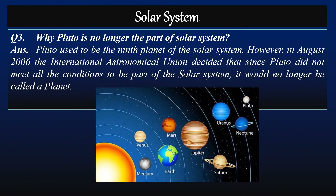Question three: Why is Pluto no longer part of the solar system? Answer: Pluto used to be the ninth planet of the solar system. However, in August 2006, the International Astronomical Union decided that since Pluto did not meet all the conditions to be part of the solar system, it would no longer be called a planet.